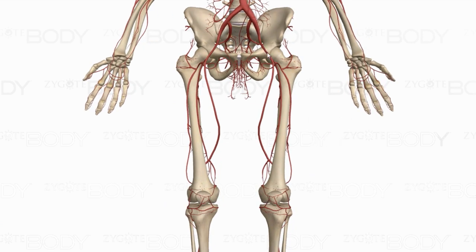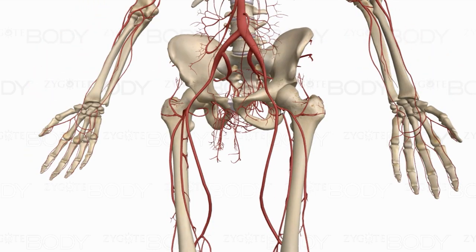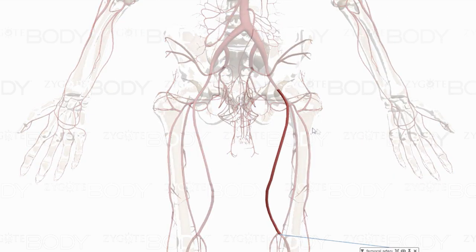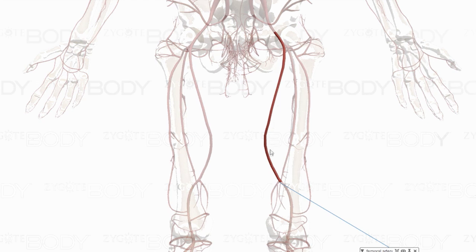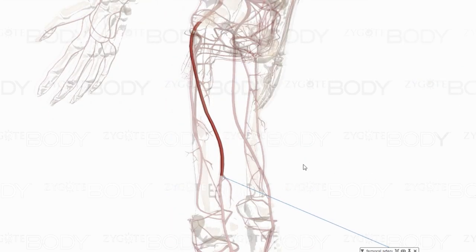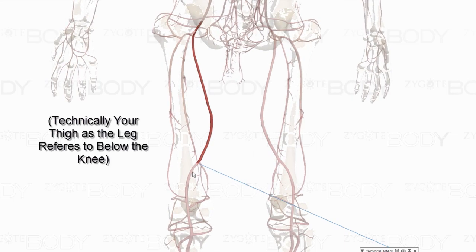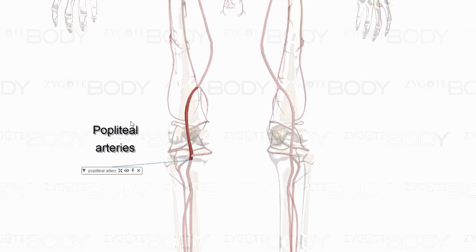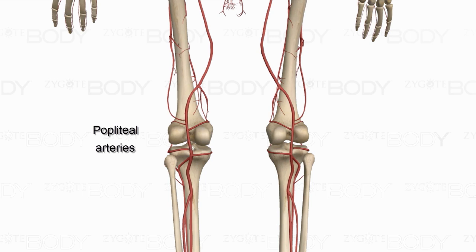The femoral artery is fairly superficial in the inguinal/groin region, then starts to go deep. One of the first branches coming off the femoral artery is the deep femoral artery. The femoral artery then comes down and loops around to the rear of the leg, becoming the popliteal artery, found in the popliteal fossa of the knee.